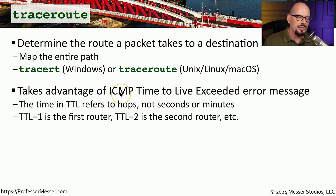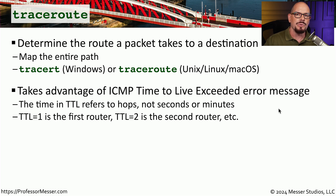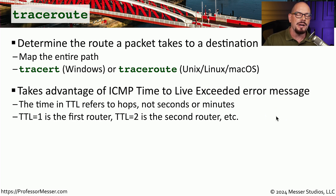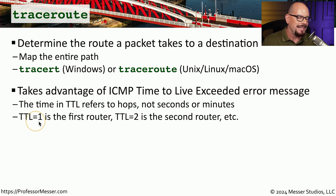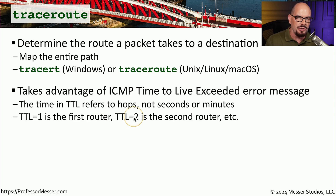Traceroute uses the ICMP Time to Live Exceeded error message — a message sent back to the originating station saying it could not complete the request because the TTL was exceeded. In IP, time to live refers to the number of hops or routers being traversed, not seconds or minutes. Traceroute modifies the TTL and performs this test over the network, starting with a TTL of one to get info about the first router, then TTL of two for the second router, and so on.